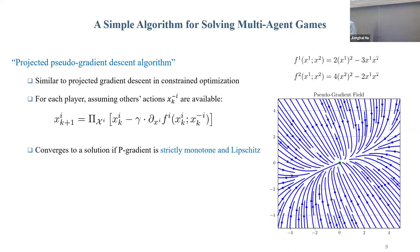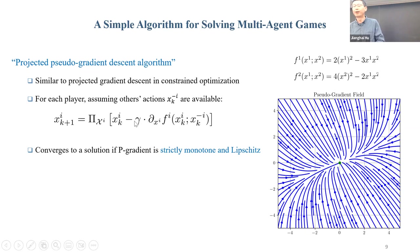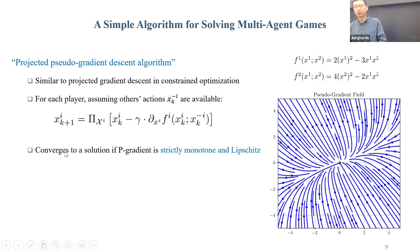We all know that for constrained optimization, projected gradient descent is a popular algorithm. Let's apply that to solve the game problem — this is called projected pseudo-gradient descent. Starting from the current guess of the solution, perform a gradient descent step. This is done in parallel by all players: each one takes the gradient descent with respect to their own decision variable, then projects back to their local feasible set. It can be shown this converges to a critical point under the assumption that the pseudo-gradient operator is strictly monotone and Lipschitz.